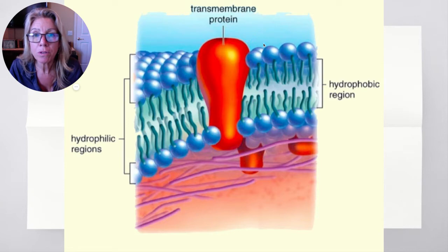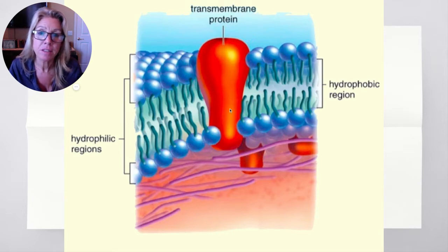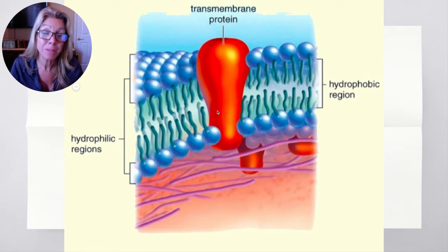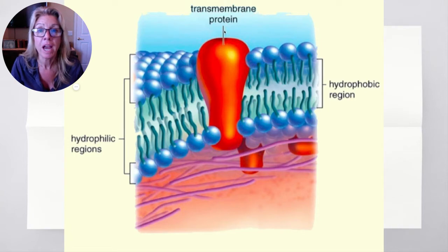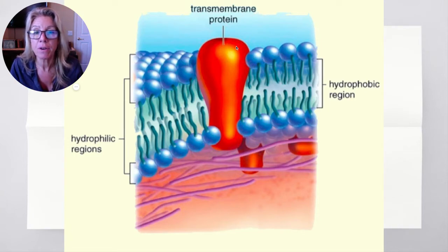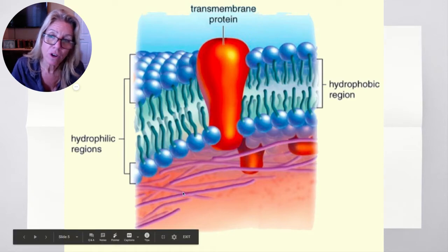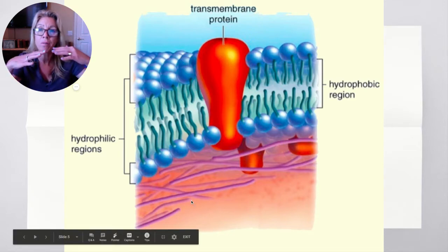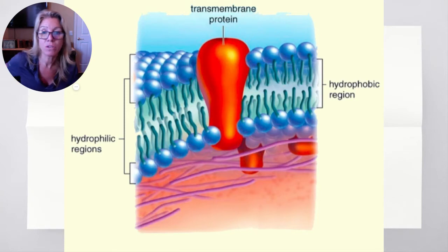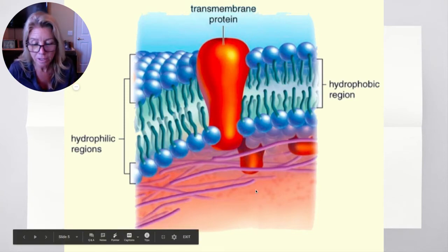When you look at this protein in the hydrophobic region of the membrane, the amino acids there must be hydrophobic because the fatty acid chains are hydrophobic. The part facing the watery exterior or interior must be hydrophilic. And right inside here, what supports the cell membrane is the cytoskeleton — you can see parts of the cytoskeleton right here.